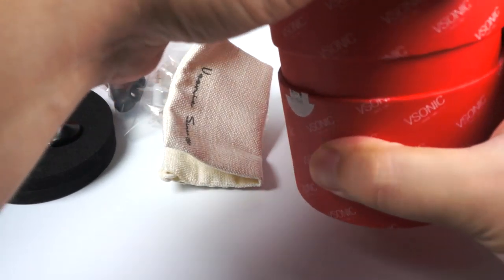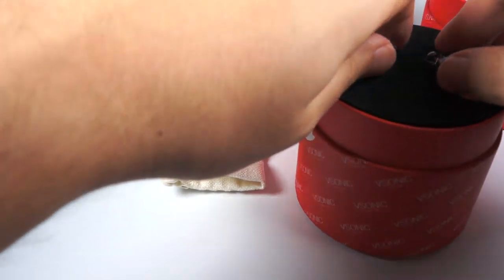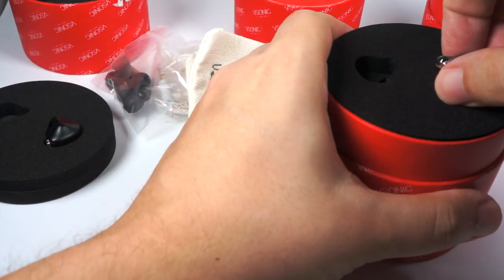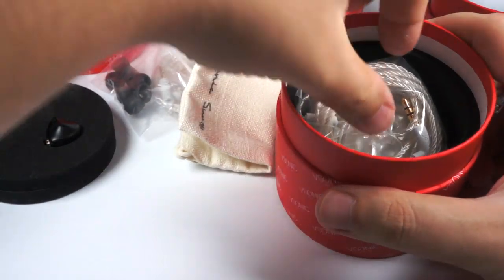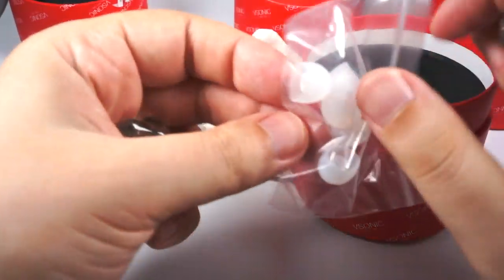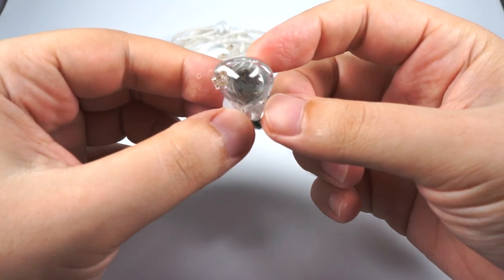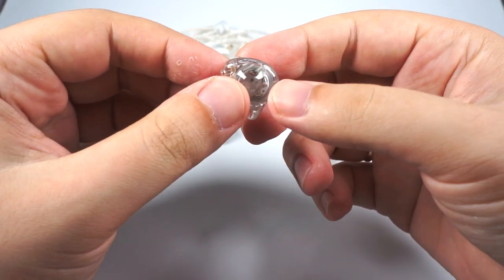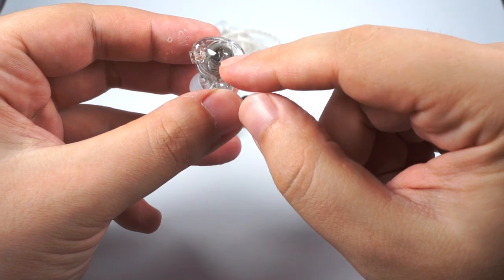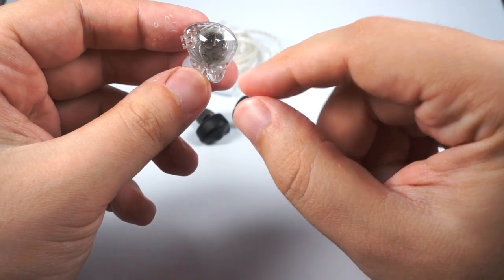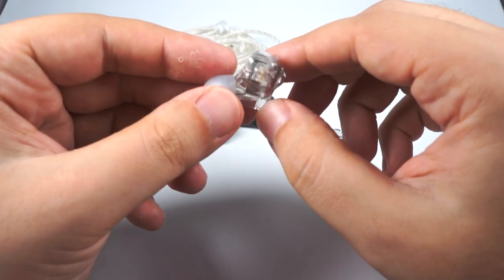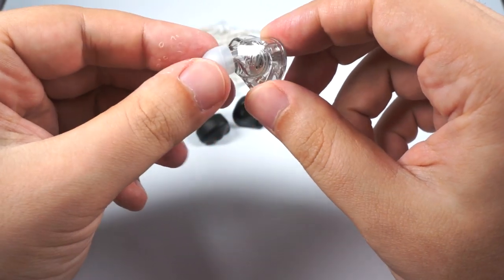Same package, same earphones, same accessory set—everything is totally similar. The transparent version has an unusual design—the face plate works as a magnifying glass showing the internal driver with a zoom effect. It looks really nice and you can see the driver from this side.